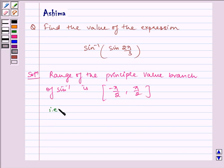That is, sine inverse of sine θ is equal to θ if minus π by 2 is less than or equal to θ is less than or equal to π by 2.